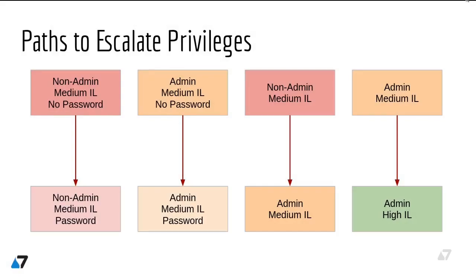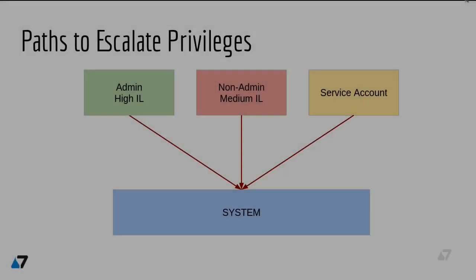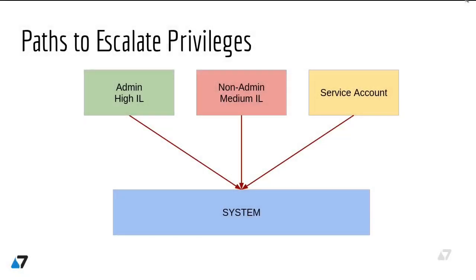During this course, we're going to cover several paths of privilege escalation. Starting from a non-admin, low-privileged user running in medium integrity without any password, we'll go through getting credentials of the running user or other more privileged users in the system. Sometimes getting a password doesn't give you direct promotion to a higher integrity level, but it might help in eventually reaching higher privileges. We'll also see how to become a local admin with and without changing integrity level, as well as techniques for becoming a system user starting from different levels — either from non-admin, admin, or even a service account.